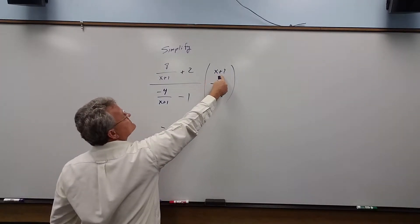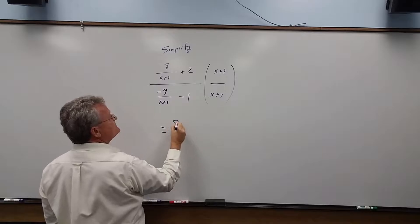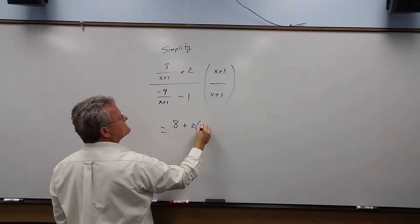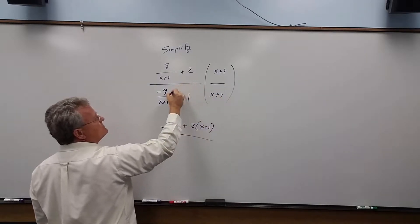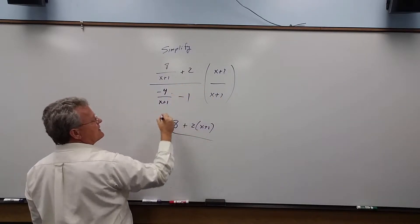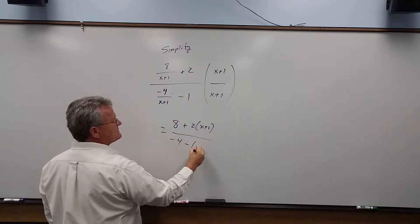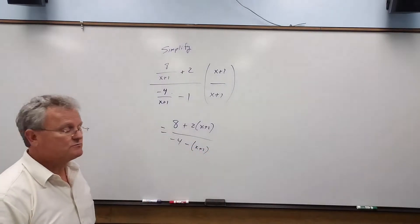When we distribute, 8 over x plus 1 times x plus 1 is 8 plus 2 times x plus 1. In the denominator when we distribute, the x plus 1's cancel. We're left with minus 4 minus 1 times x plus 1. Well, 1 times x plus 1 is x plus 1.